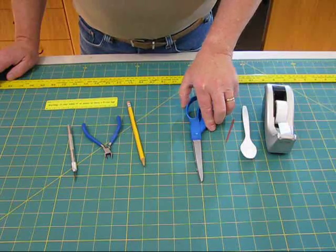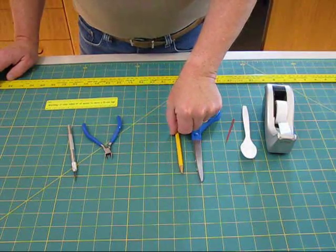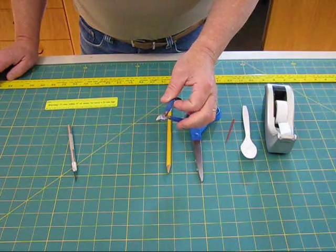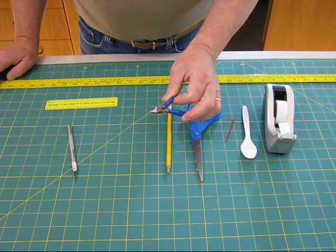A pair of scissors, a pencil, a pair of diagonal cutters, or wire cutters, this will be used for snipping off the zip ties.